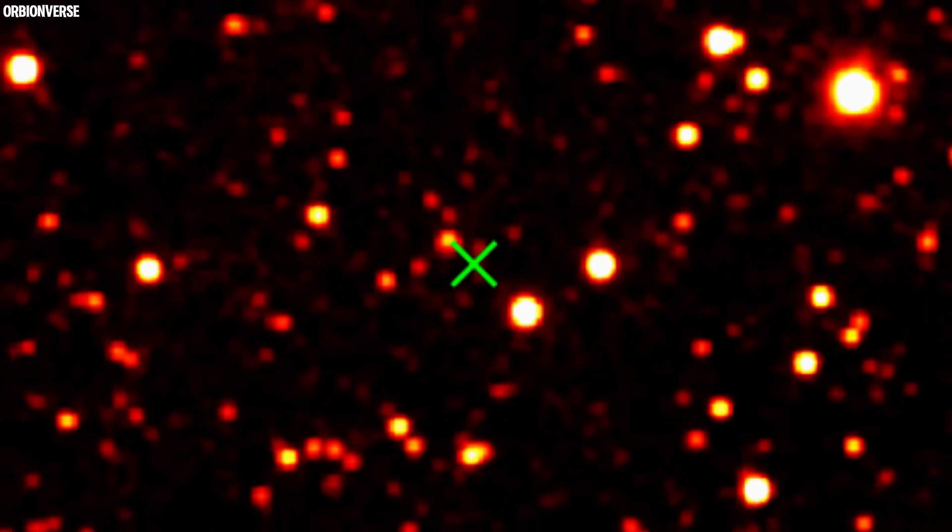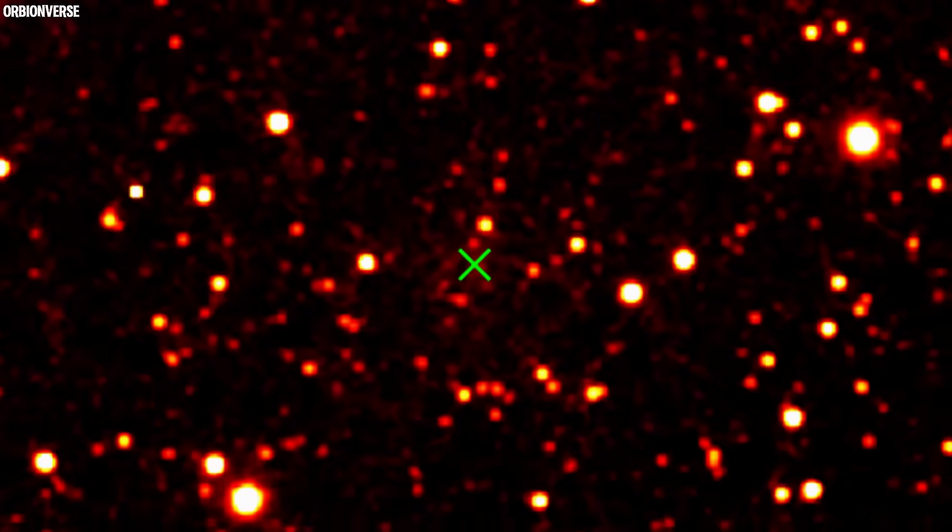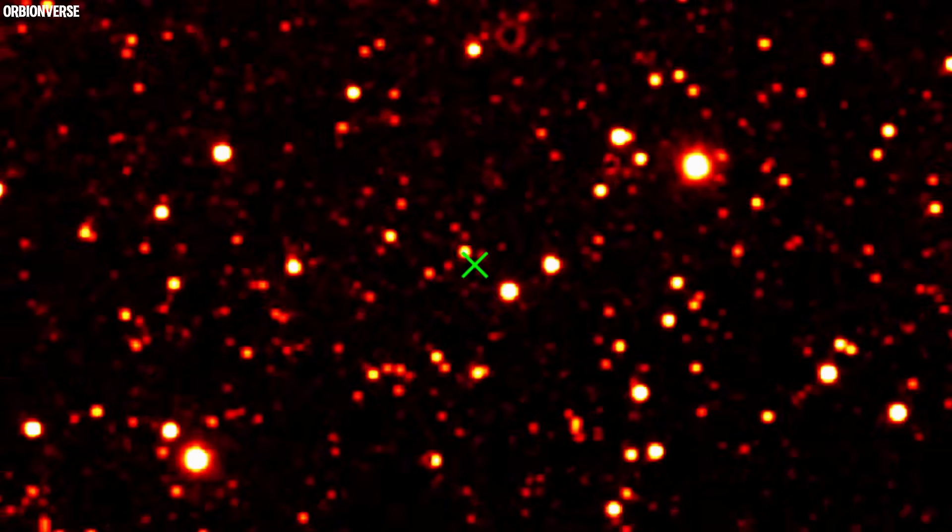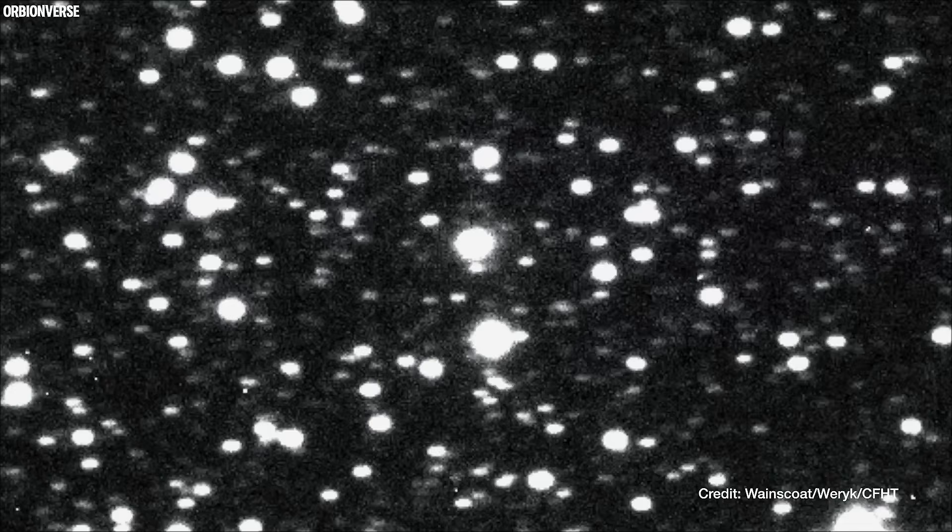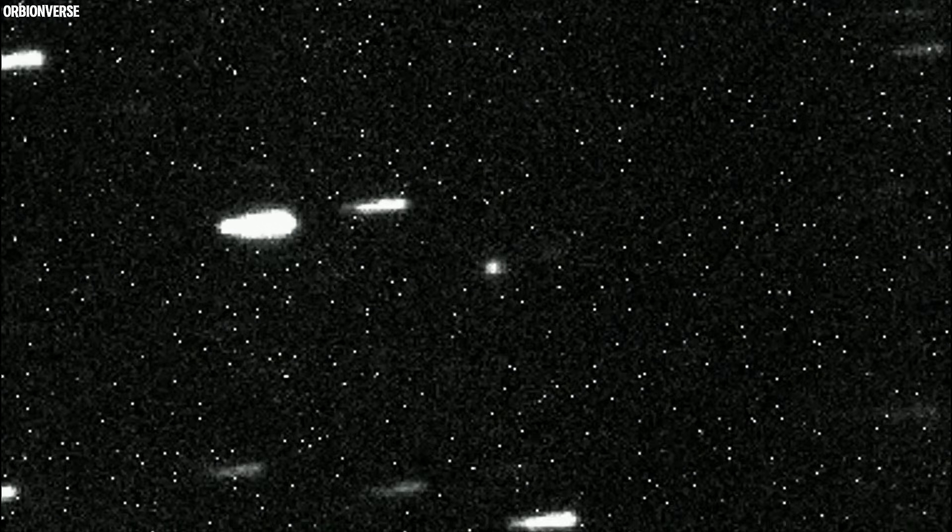Every 22 seconds, the same interval recorded over Mars, the light would flicker, pause, and return. On. Off. On. Off. No comet behaves like that. Nothing in nature keeps time that perfectly.